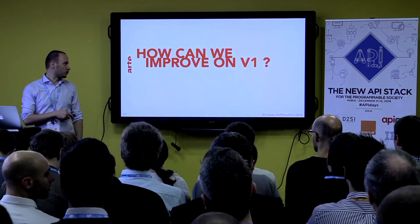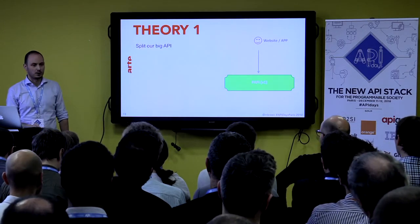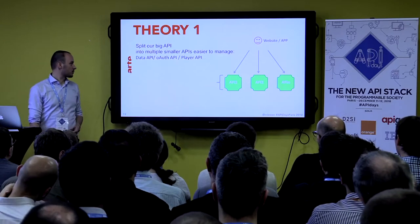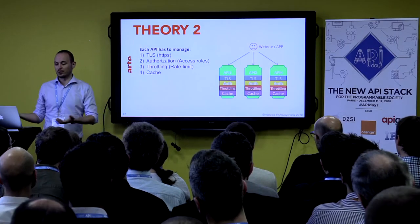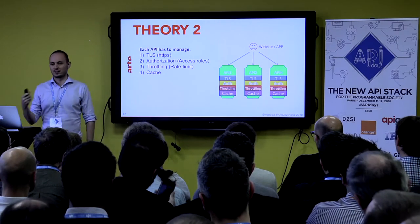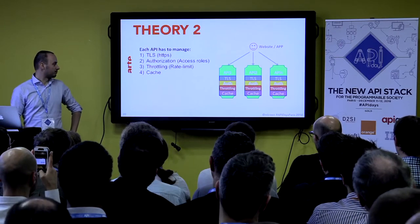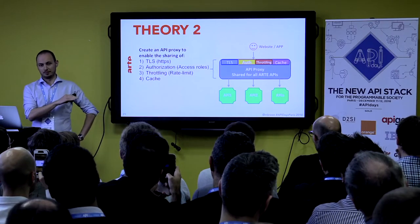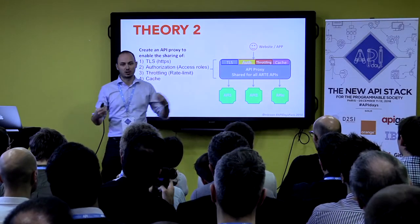So how can we improve on the first version? We split our big API into smaller API chunks that were easier to manage. But by doing so, every API had to support all those blocks — like TLS, authorization, throttling, and cache. So we tried to build an API proxy that would take care of all of this, so that API developers would only concentrate on their core API.